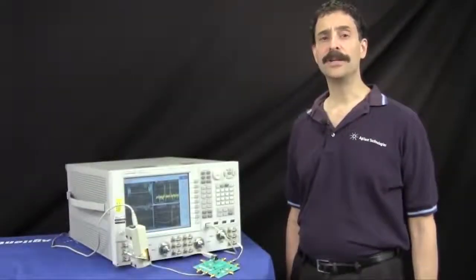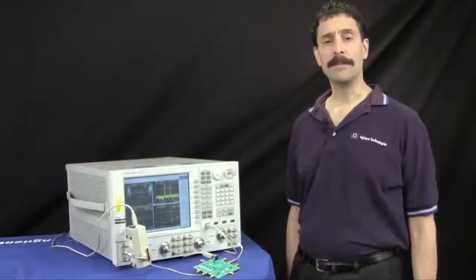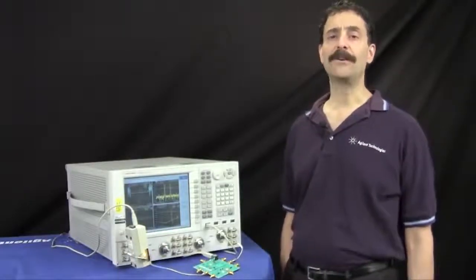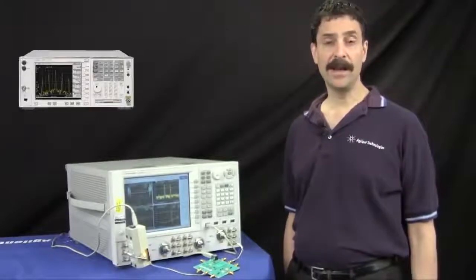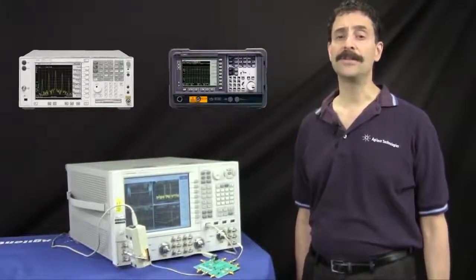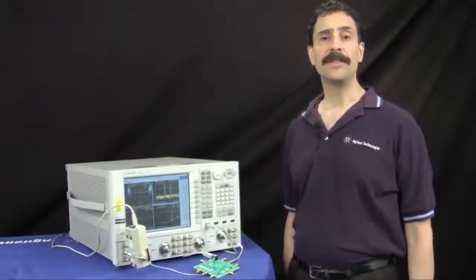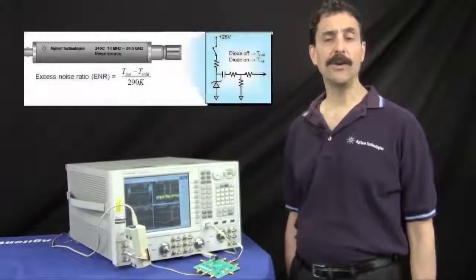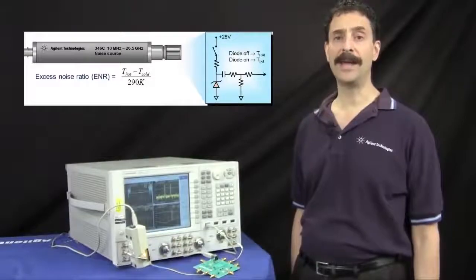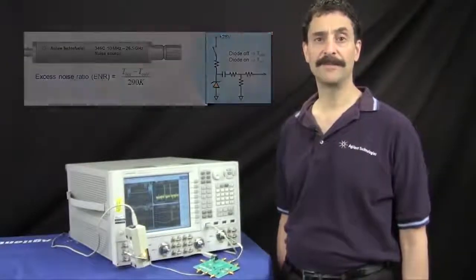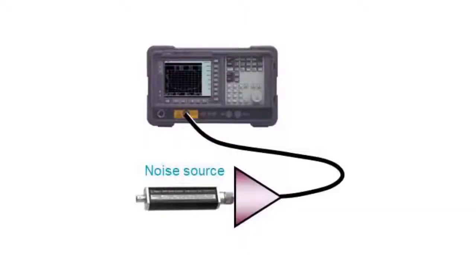How is noise figure measured? The most common measurement approach is called the Y-factor method. This method is used with Agilent's spectrum analyzers and noise figure analyzers. The Y-factor method uses a calibrated noise source, which is assumed to present a perfect 50 ohm match to the DUT. Y-factor measurements provide good results for most connectorized devices, especially when using low ENR noise sources.